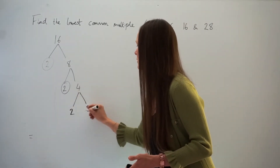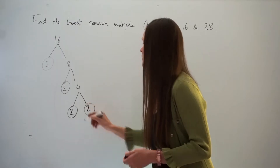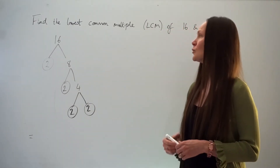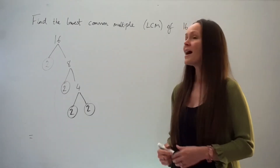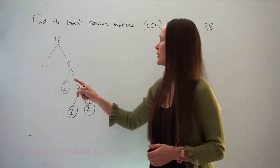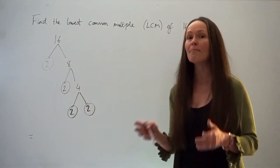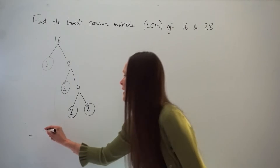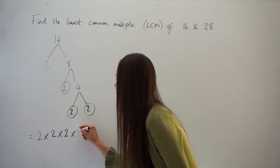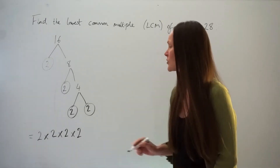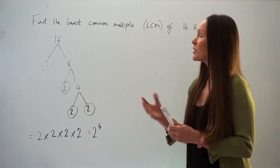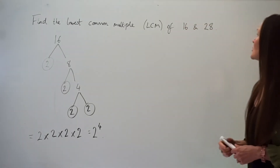Two factors that multiply to give 4: two times two. Once you finish your factor tree, it's a good idea to write the number 16 as a product of its prime factors — take the circled prime factors and multiply them together: 2 × 2 × 2 × 2. You can also write this as 2 to the power of 4.